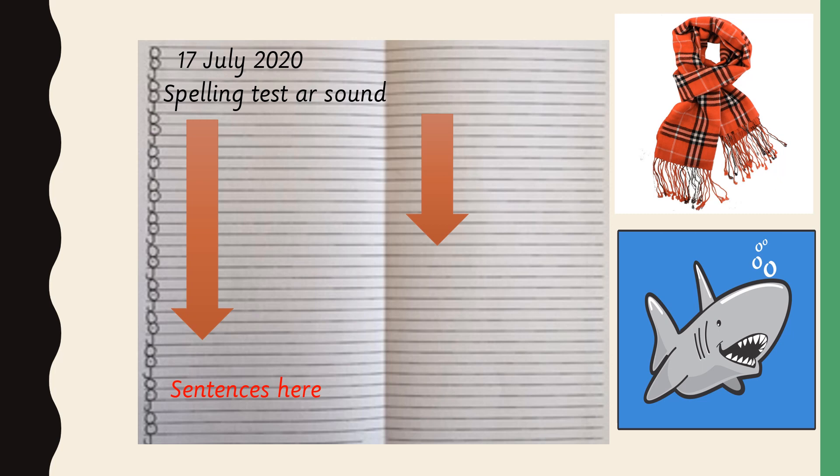Sentence number two. I ran to the farmyard to see the black crow. I ran to the farmyard to see the black crow.